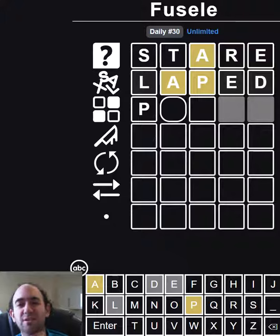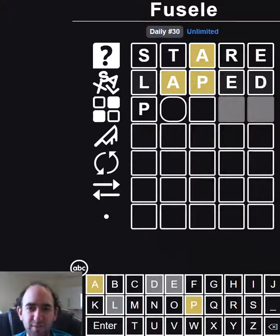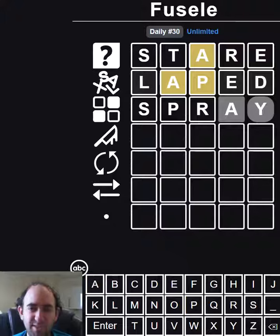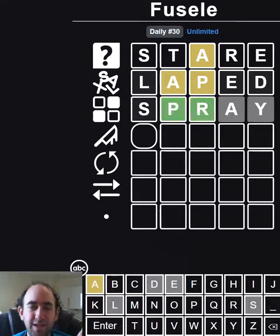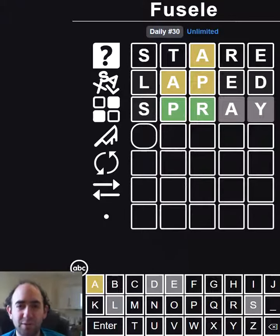We still want to try an R, an S or a T I think. Because we need to find out which one of those was correct from row one. So let's try spray because then we'll know if the S or the P is yellow or green. And they are so the R was the liar on row one.